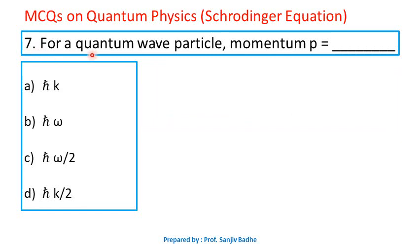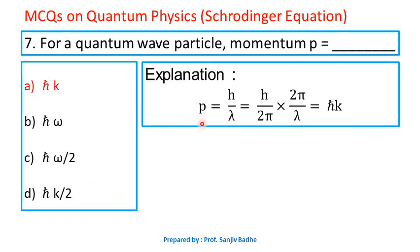Question number 7. For a quantum wave particle, momentum P equals — options are ℏk, ℏω, ℏω/2, or ℏk/2. Using De Broglie's hypothesis, λ equals h/P, so P equals h/λ. Multiplying and dividing by 2π, we get h/2π times 2π/λ. Here h/2π is ℏ and 2π/λ is k, the propagation constant. Therefore momentum P equals ℏk. Option A is correct.